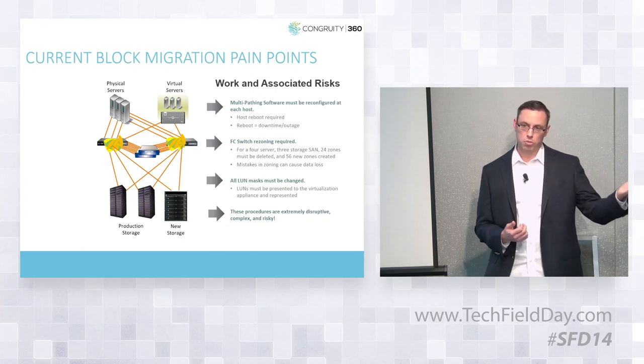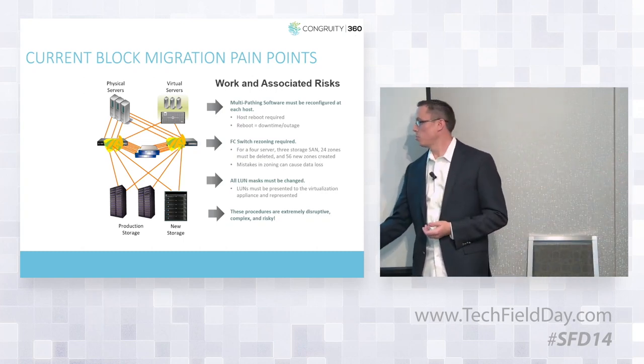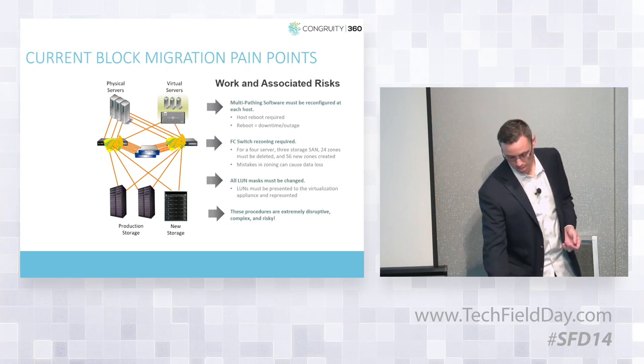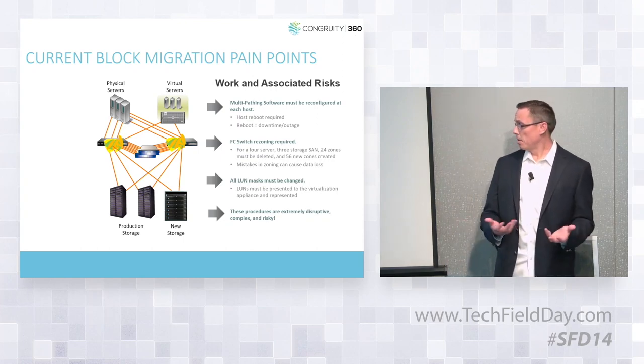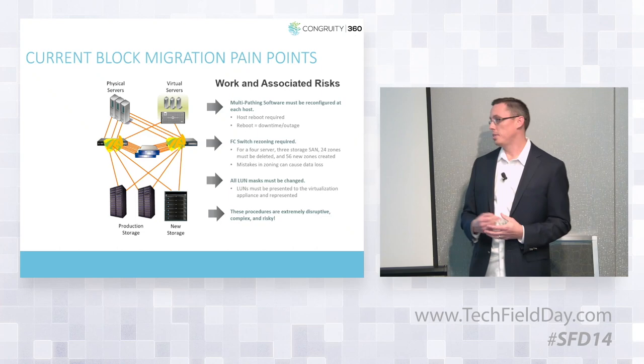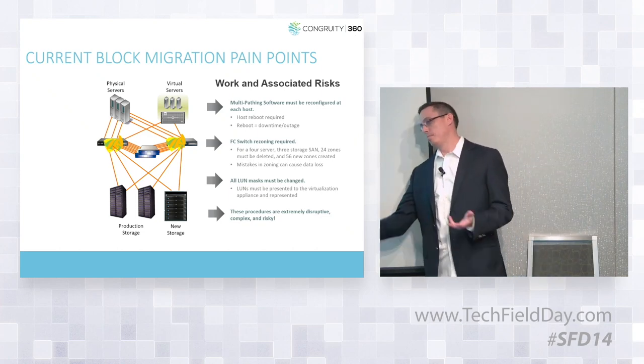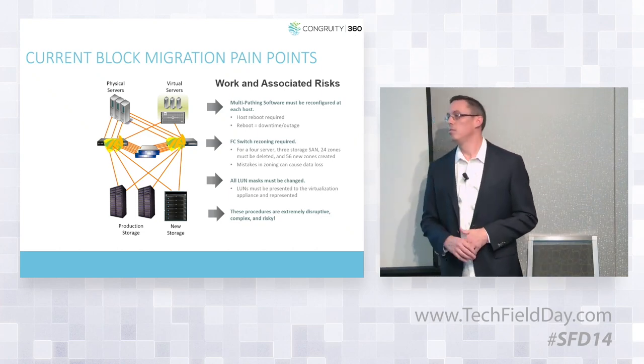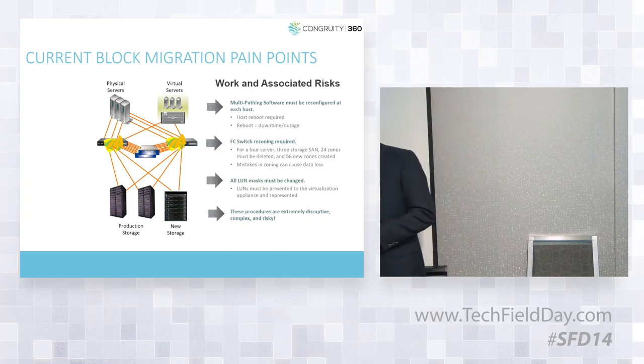From there, you form the discovery, begin masking the current LUNs on the source storage array, and start replicating data to the target array. Based on the cutover windows, you do a delta sync and cut over. On the practical side, dealing with large amounts of data - a lot of places just don't have the network bandwidth to move that data into the data center, so you need standardized processes for staging.